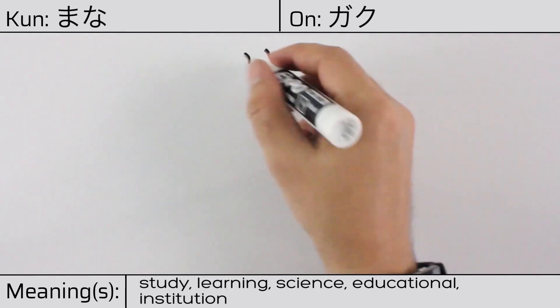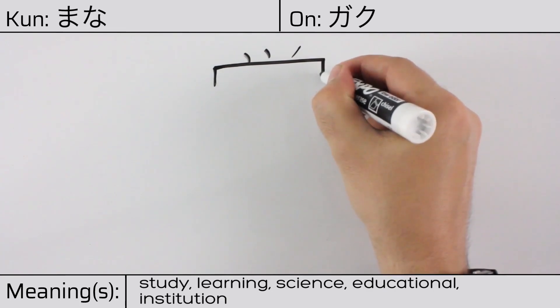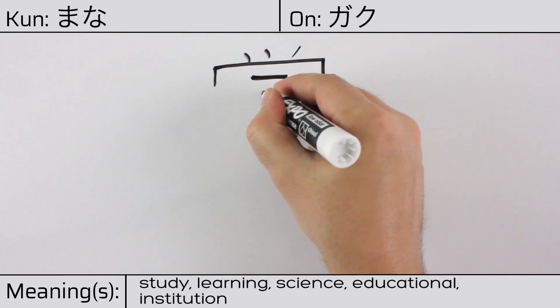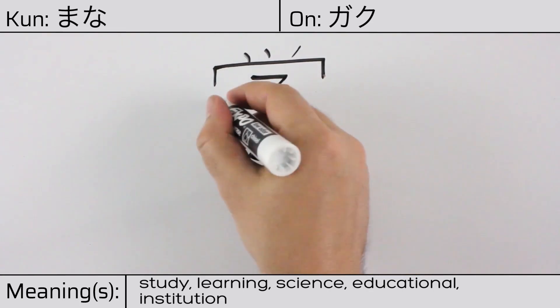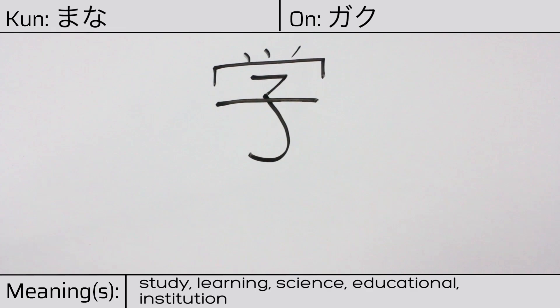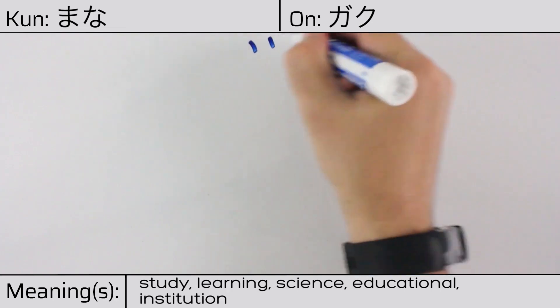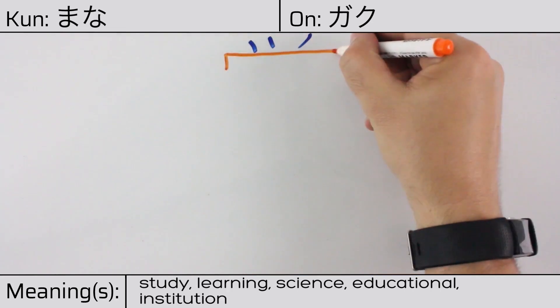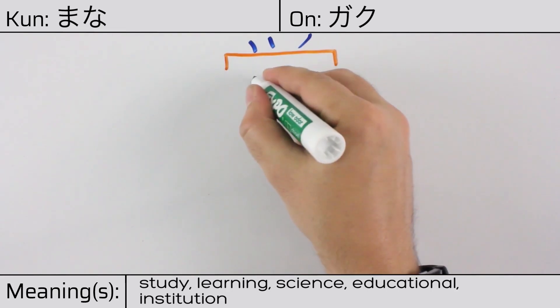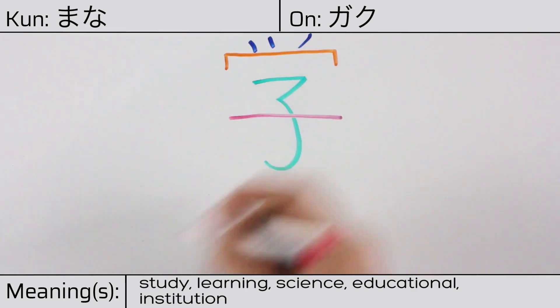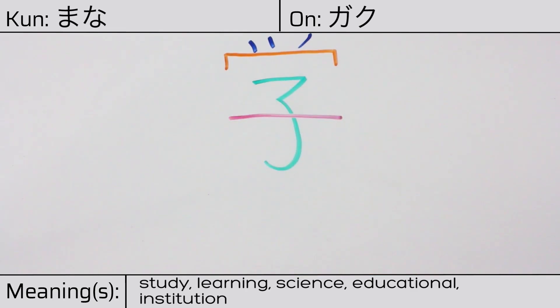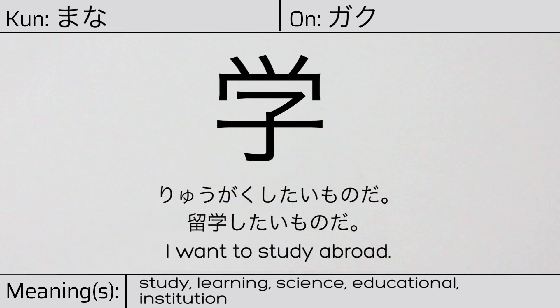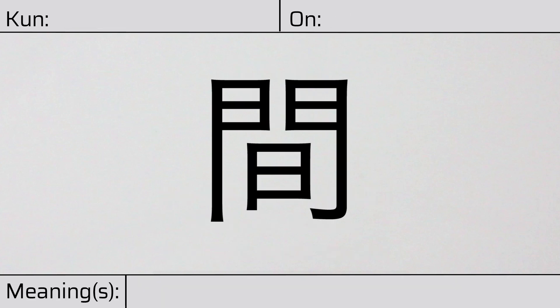Here is the stroke order. This character is made up of the following radicals or parts: katakana to at the top, followed by the cover or crown radical known as wakamuri, and the child or seed ko at the bottom. You can remember this kanji by the following hint: child learning something at school. Our example sentence is: Ryūgaku shi tai mono da — I want to study abroad.